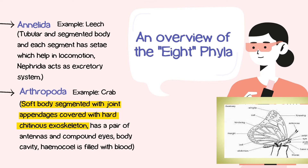They have a pair of antennas and compound eyes. This means that a butterfly, a crab, a cockroach — all have antennas. They also have compound eyes.